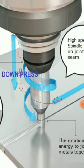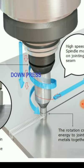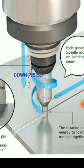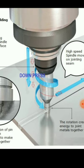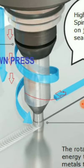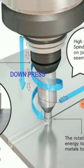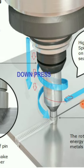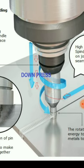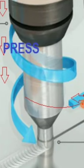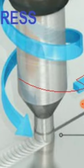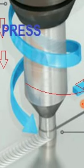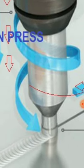A constantly rotating tool with a specially designed shoulder and pin is plunged into the workpiece. You can see the downward force. The frictional heat is generated by friction between the tool and the welding material, causing the stirred material to become thermoplasticized.